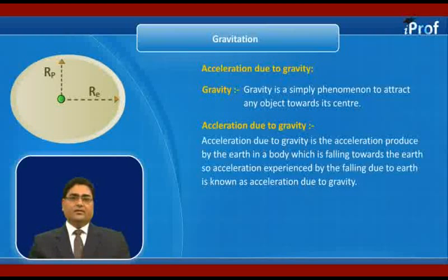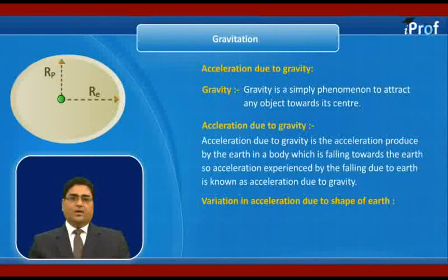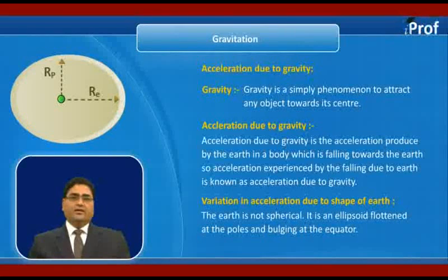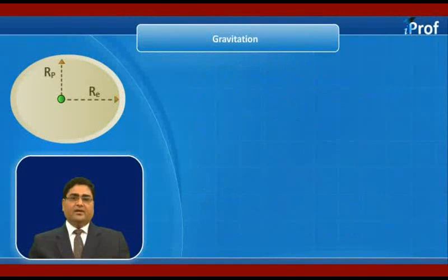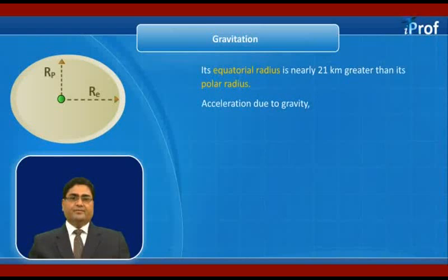Let us find variation in acceleration due to the shape of earth, because earth is not spherical. It is ellipsoid — flattened at the poles and bulged at the equator. Since polar radius is less than equatorial radius, approximately the equatorial radius is 21 km more than the polar radius. So acceleration due to gravity g = GM/r² is more at poles than at equator.